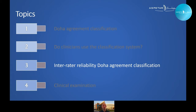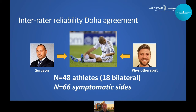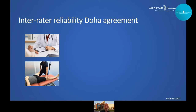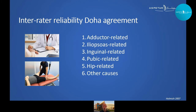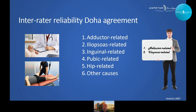The next question was: how reliable is the classification system in a clinical setting? This had not yet been investigated. We included 48 athletes with long-standing groin pain, of whom 18 had bilateral symptoms. They were assessed in a blinded manner by two examiners who performed history taking and standardized clinical examination, blinded to imaging findings and any other information, then classified groin pain according to the Doha Agreement. Since groin pain can present with multiple entities, examiners were asked to provide both a primary and secondary diagnosis.